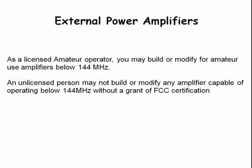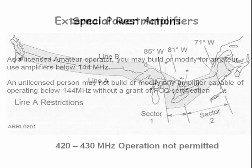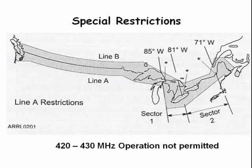As a licensed amateur operator, you may build or modify for amateur use amplifiers operating below 144 megahertz. An unlicensed person may not build or modify any amplifier capable of operating below 144 megahertz without a grant of FCC certification. Additionally, 420 to 430 megahertz operation is not permitted along the border between the United States and Canada.